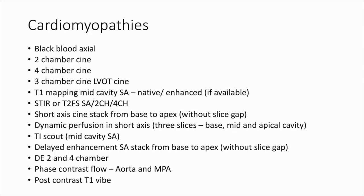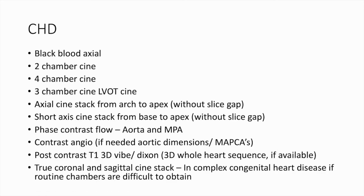The imaging protocol for cardiomyopathies is similar to viability with the addition of STIR images to look for myocardial edema, and T1 and T2 mapping if available. In congenital heart diseases, in addition to the regular sequences, an axial cine stack is obtained for RV volumes and a contrast angio is done to look for aortic dimensions and MAPCAs. A post-contrast 3D T1 is also done if available. For complex congenital heart disease where normal routine imaging planes are not obtainable, a true coronal and sagittal cine stack can be obtained.